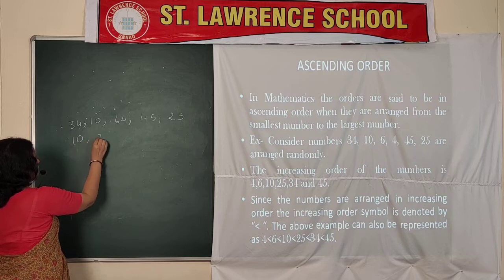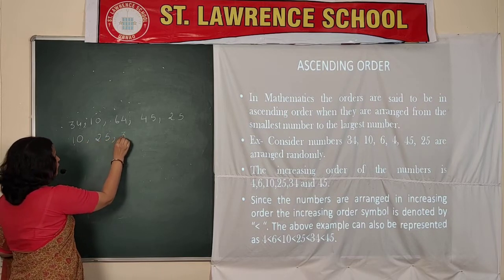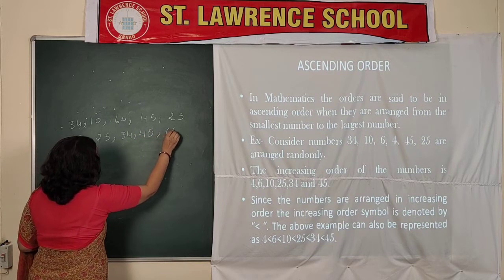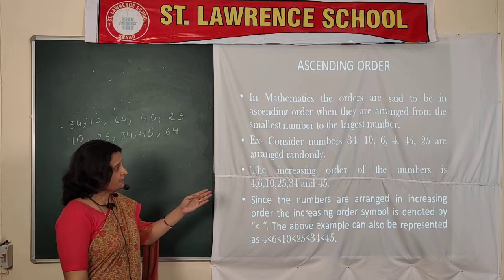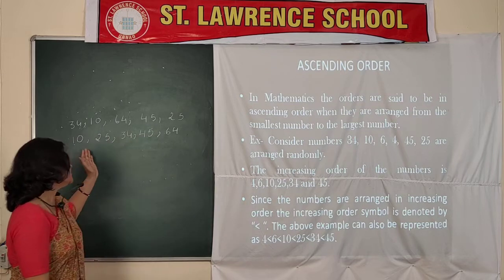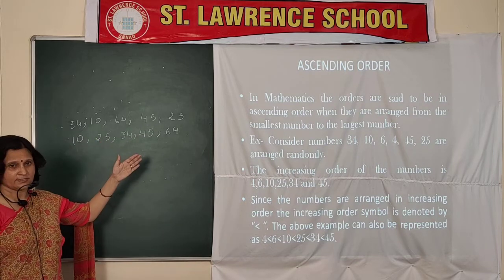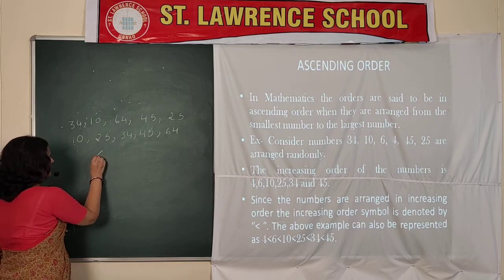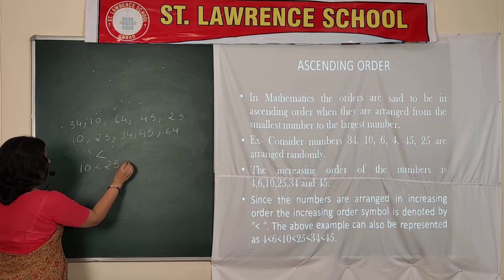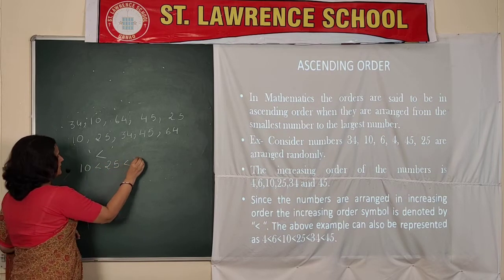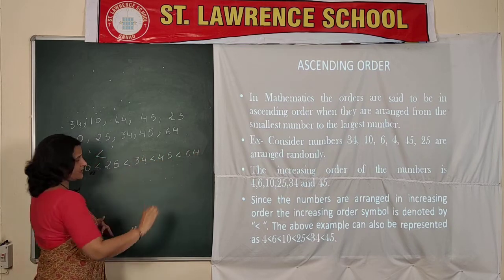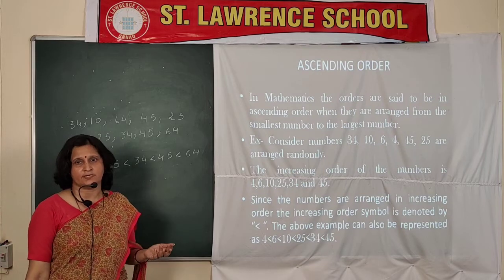After 10 we write 25, then 34, then 45, and at the last we write the largest number, 64. Since the numbers are arranged in increasing order, we denote it by the less-than symbol: 10 < 25 < 34 < 45 < 64. Ascending means increasing order.